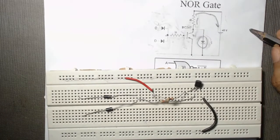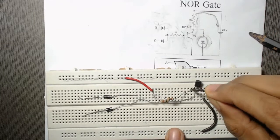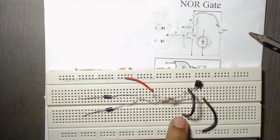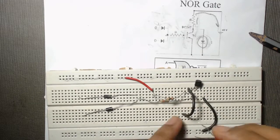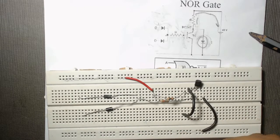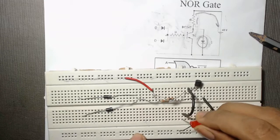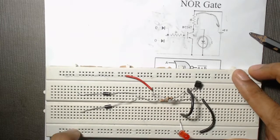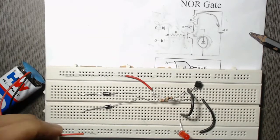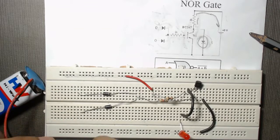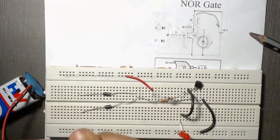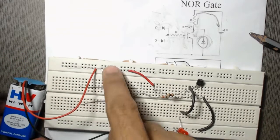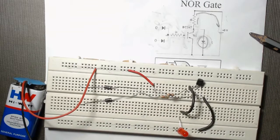Now we connect the output LED. We use a wire from the VCC row and connect the longer (positive) terminal of the LED to that wire, and connect the negative terminal to our ground row.